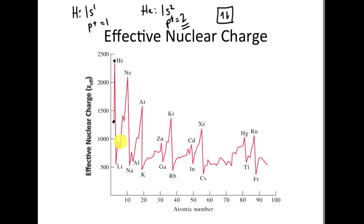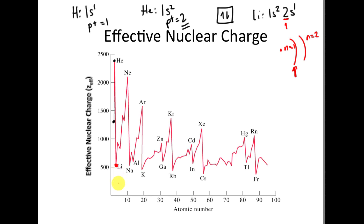Now look what happens going from helium to lithium. Lithium has 1s², 2s¹. I've dramatically increased electron shielding — I've added a new energy level, going from N=1 to N=2, and therefore shielding increased. The N=2 electron has shielding from the 1s level. So we see a dramatic drop in ZEFF. That's why lithium has such a low ionization energy: shielding went up, ZEFF went down due to the introduction of that new energy level, so this electron experiences a very low ionization energy.